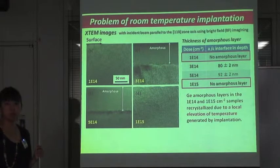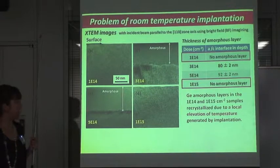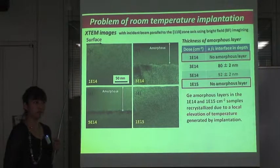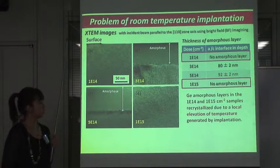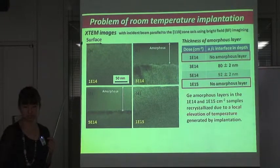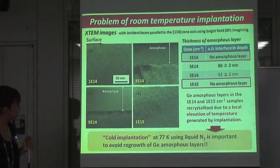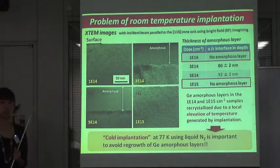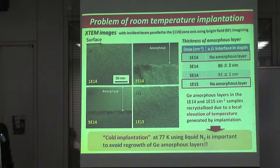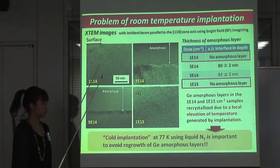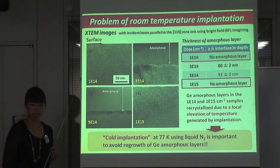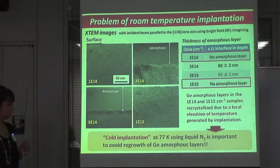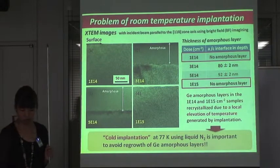We suggest that the Germanium amorphous layers in the lowest and highest dose samples were recrystallized due to a local elevation of temperature generated by implantation. It was previously reported that the growth rate of Germanium amorphous layers increases at 300°C. So in conclusion, cold implantation at 77 Kelvin using liquid nitrogen is important to avoid this recrystallization.